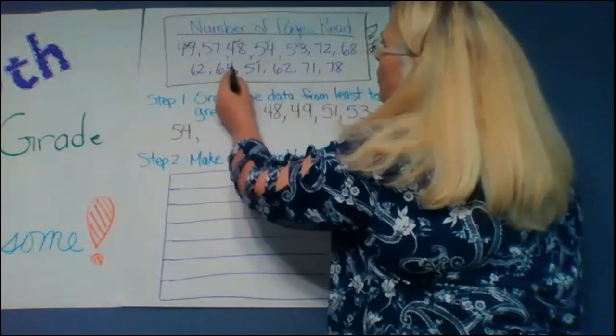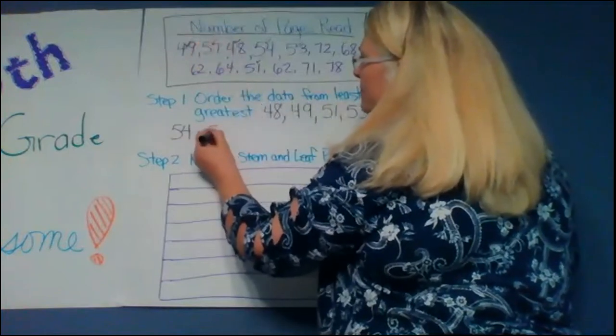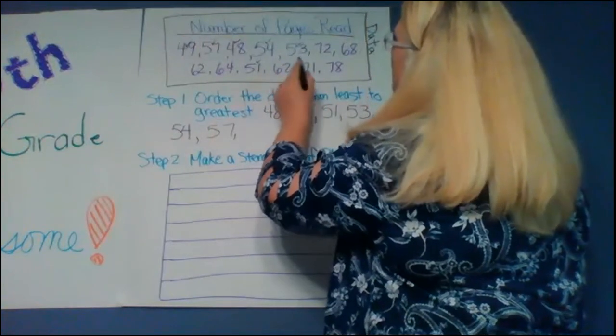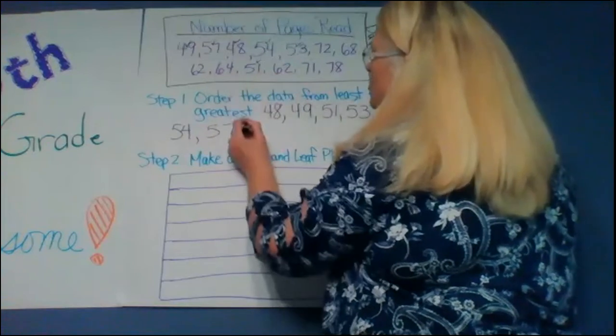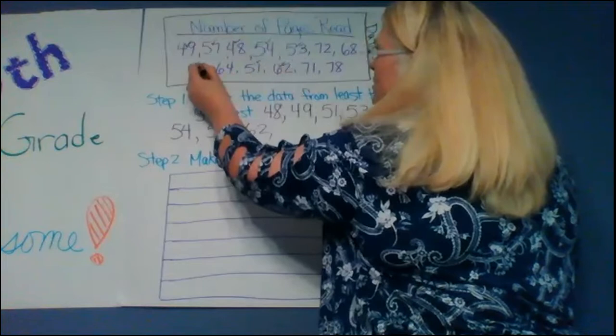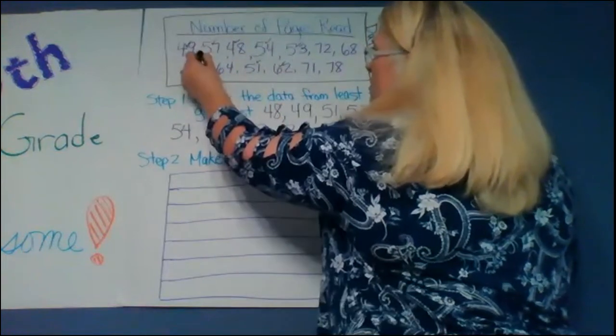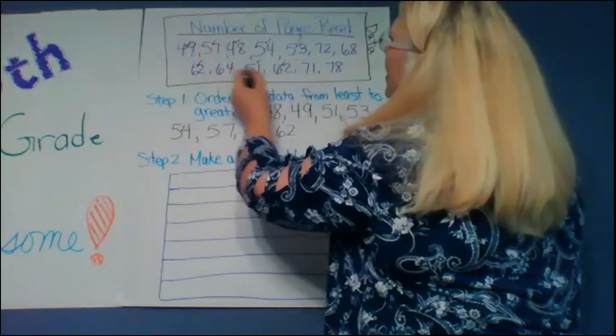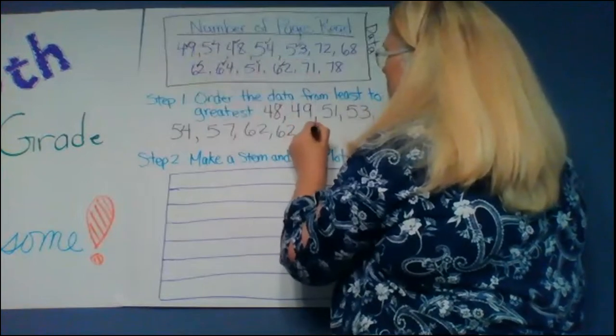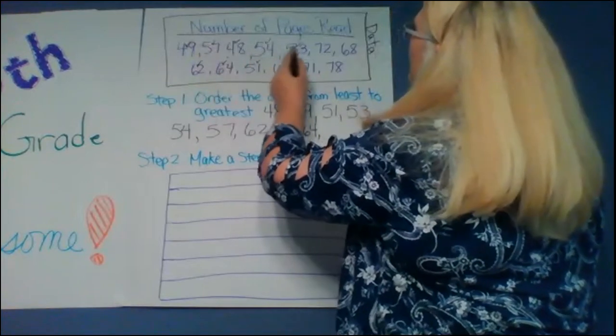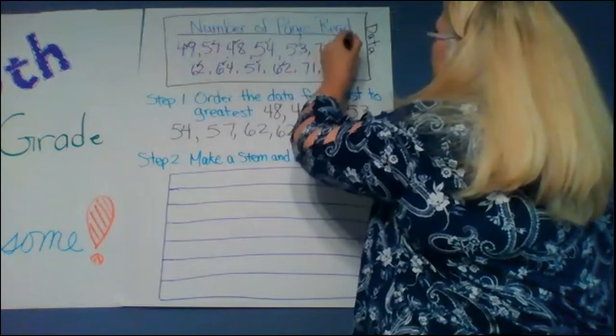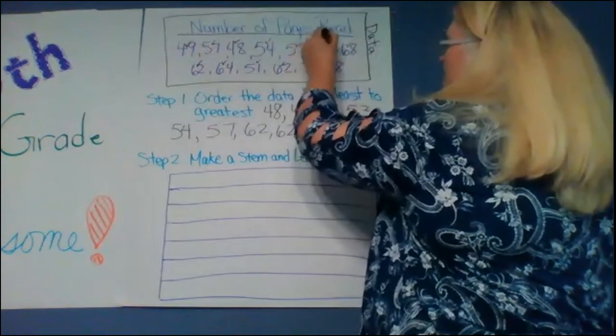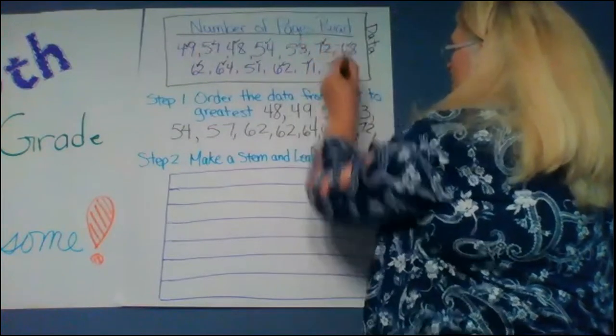After 54, 57 and then it goes to looks like 62 and notice that 62 is there twice and I'm going to write it twice. After 62 it looks like I have 64 and then onto these down here I have 68 and then 71, 72 and 78.